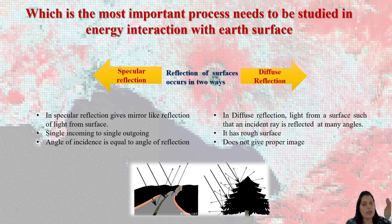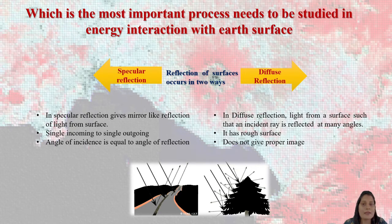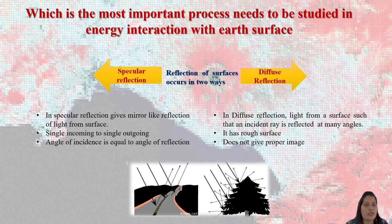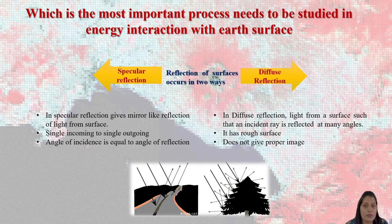The rays which are coming in go back in the same direction — single incoming and single outgoing — that is known as specular reflection. You can note that when there is specular reflection, the surface is always smooth and even; only then is specular reflection possible.